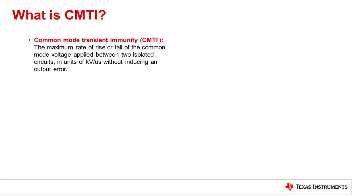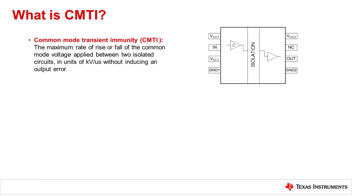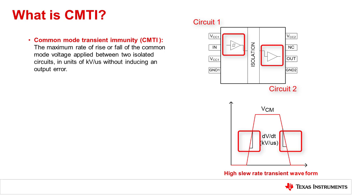Common mode transient immunity, or CMTI, describes the maximum tolerable rate of rise or fall of the common mode voltage applied between two isolated circuits. For digital isolators, the two isolated circuits in question are internal to the digital isolator and are the transmit and receive sides of the isolator. High CMTI means that the two internal isolated circuits both function within datasheet specifications without errors when the insulation barrier is struck with a very high rise or high fall slew rate transient.